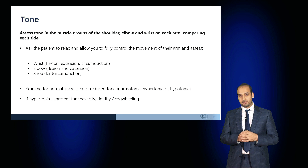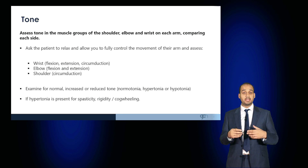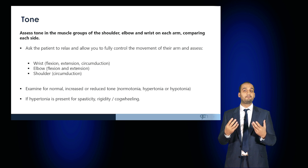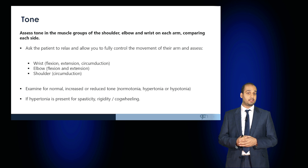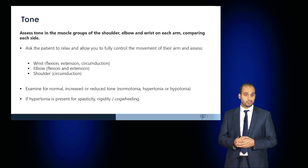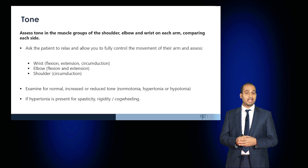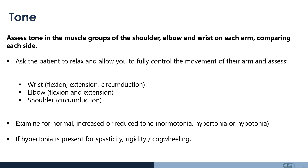Ensure that the patient is fully relaxed and that you are able to take full control of the movement of their arms. Assess the tone in the wrist, elbow, and shoulder. Assess wrist flexion, extension, and circumduction. Assess elbow flexion and extension and shoulder circumduction.